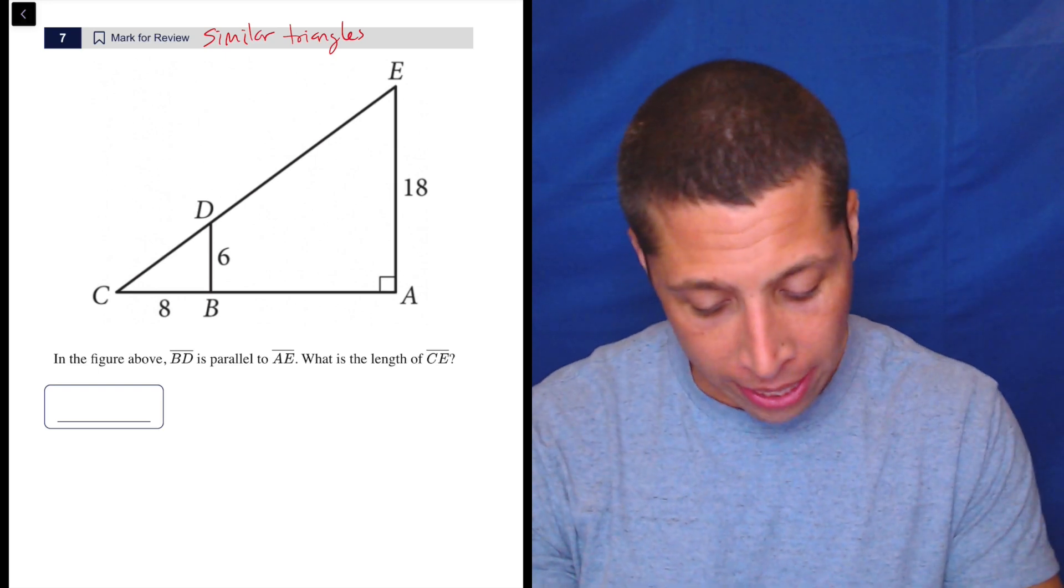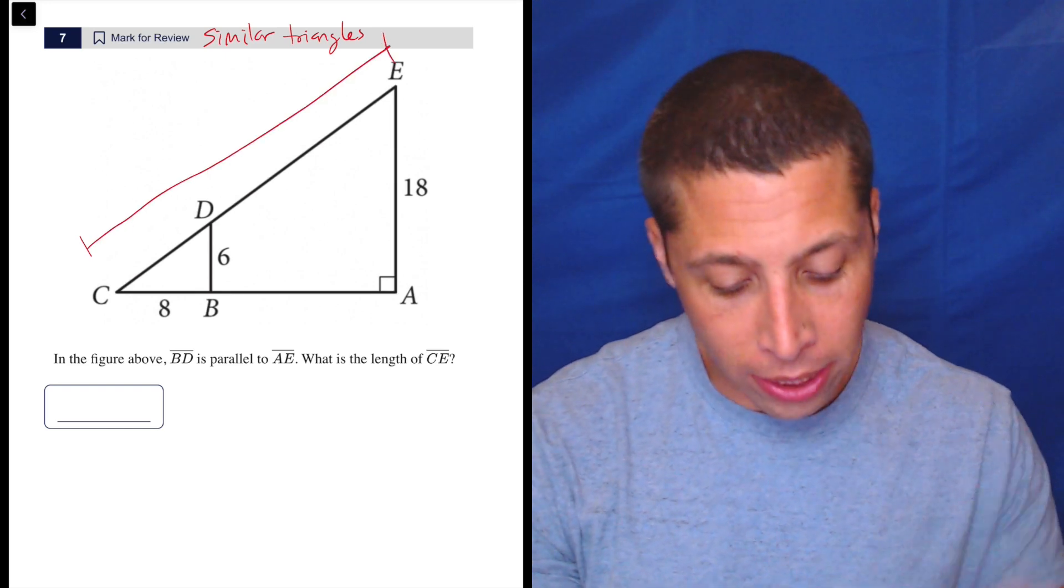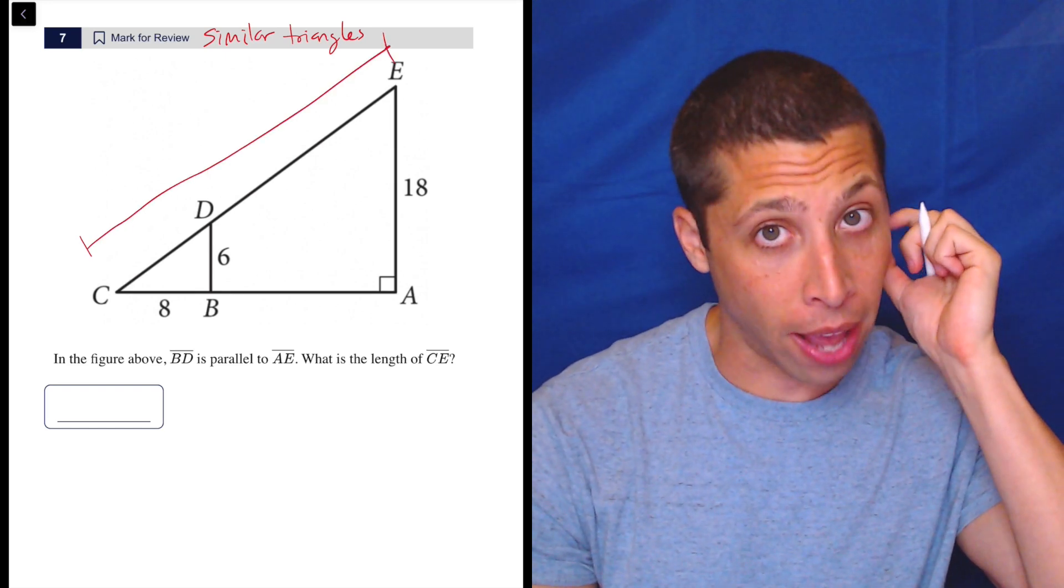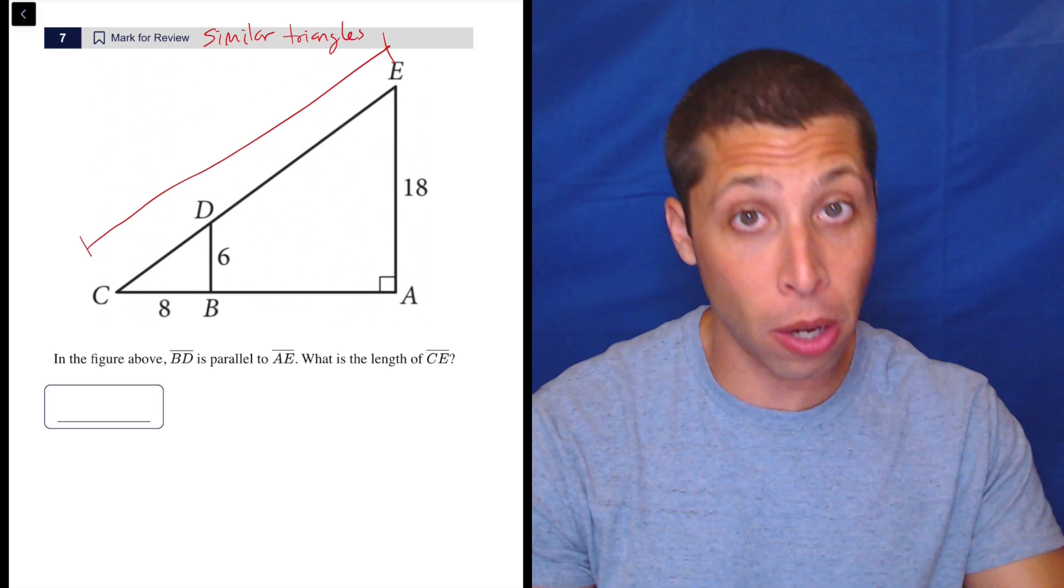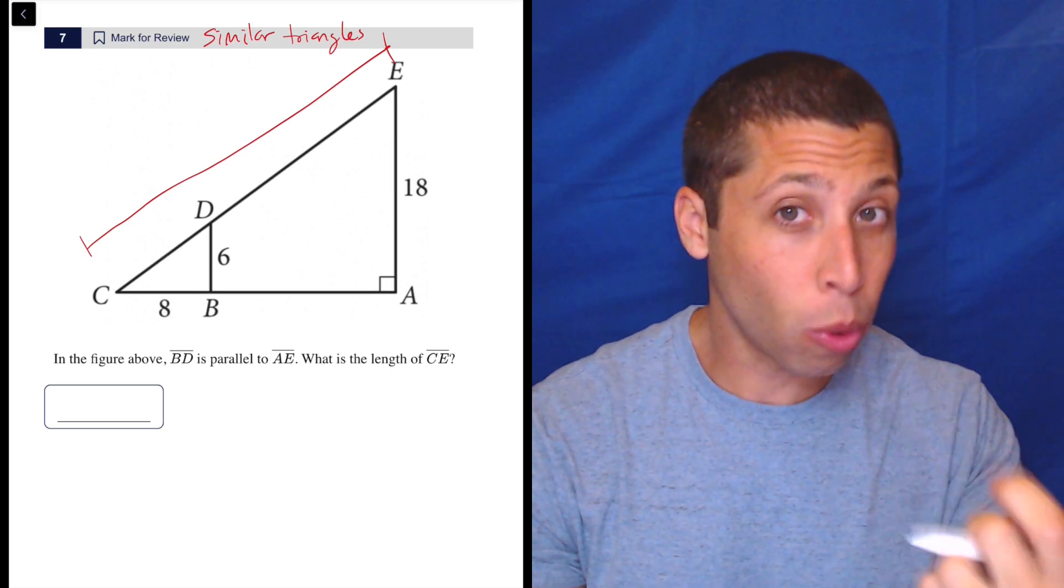The next thing we need to know is we need CE. So we're going to need to get the hypotenuse of the big triangle, but we don't have that. We don't even have the hypotenuse of the smaller triangle, but that's where I want to start.